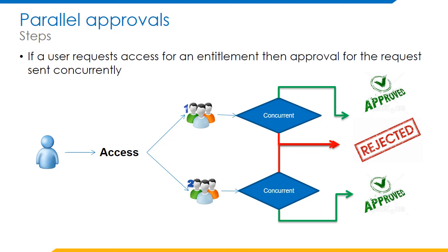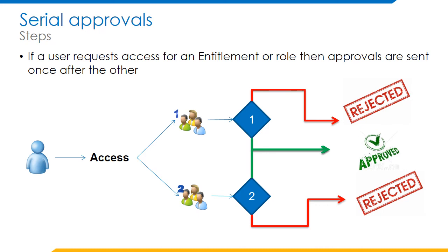Let's discuss Serial Approvals. Serial Approval is a type of approval which is an out-of-the-box feature for IdentityIQ. Approval items are processed one at a time and there must be consensus — the first approver that rejects terminates the entire approval process. In this example, when a user requests access for an entitlement or a role, it is sent to two workgroups one after the other. Only when one approval is completed will it be processed to the next approval. If the first approver rejects, the entire process will be terminated.